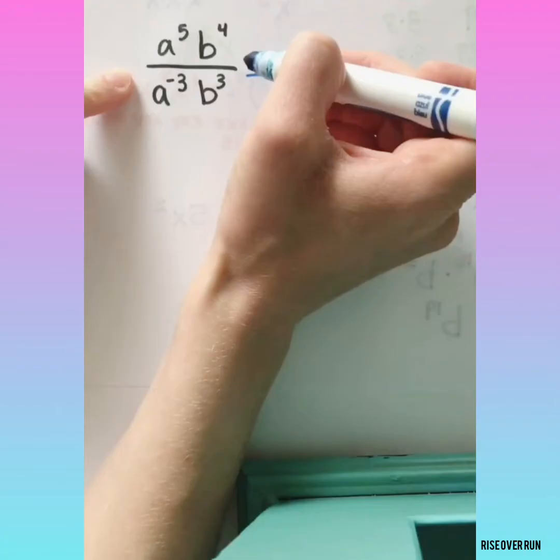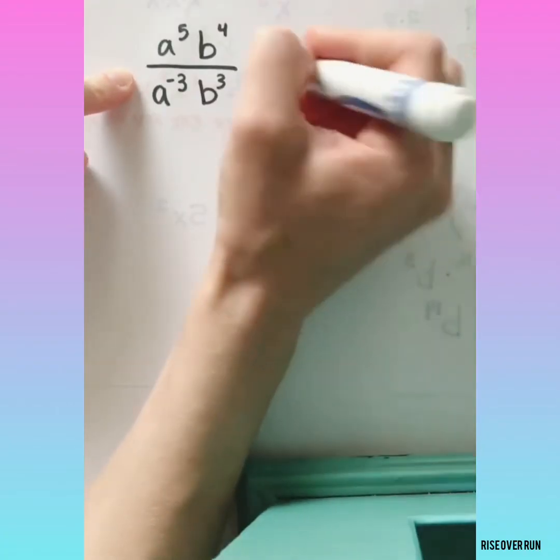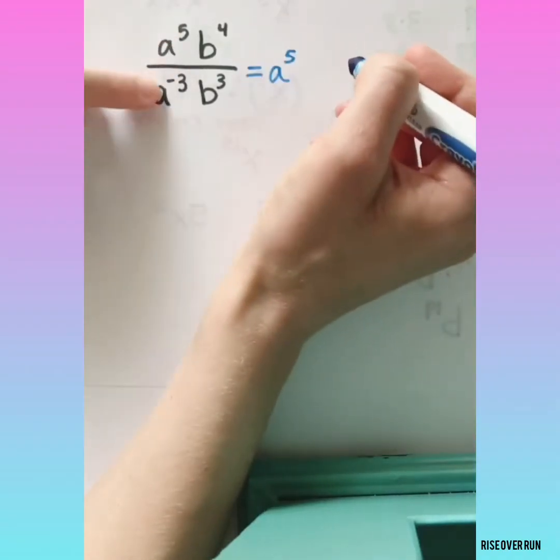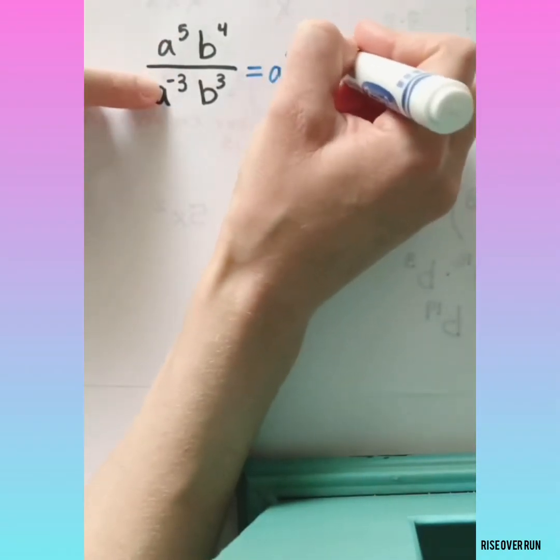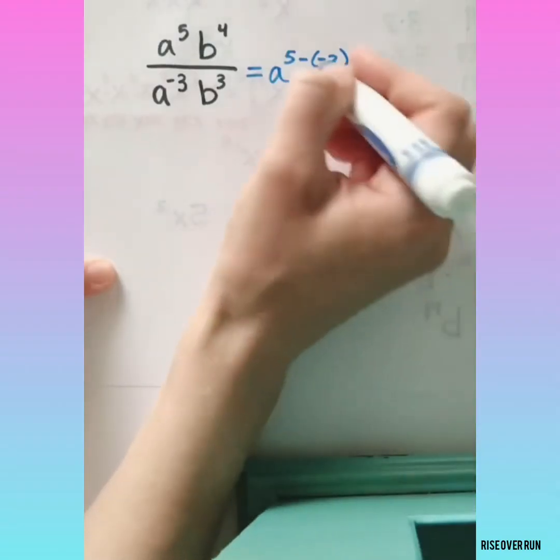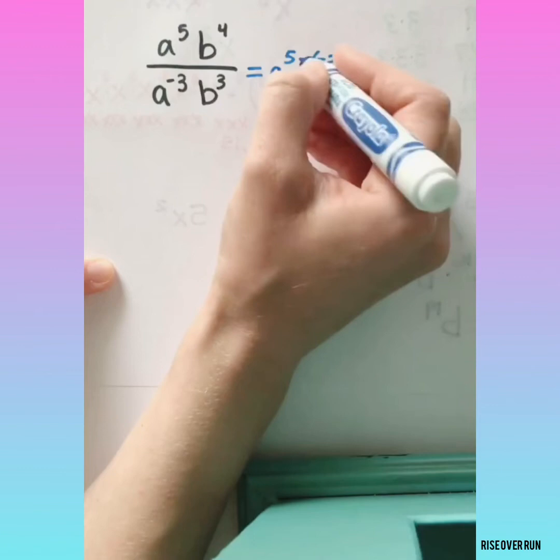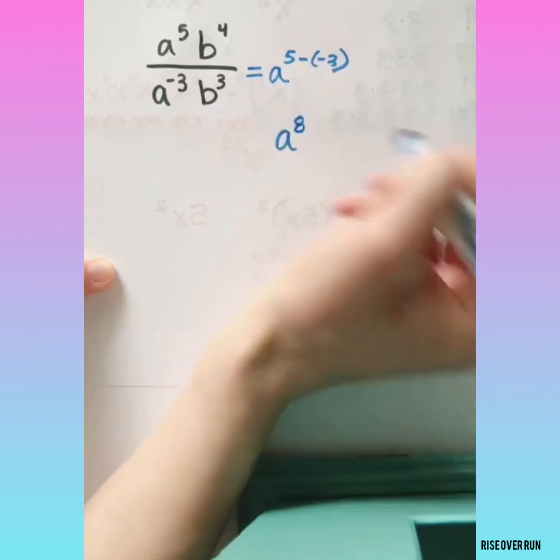This is a fraction, so that means we're dividing, so we're going to use quotient rule. We have 5 and we need to subtract negative 3. Let's go ahead and simplify this part. 5 minus a negative 3 means we're adding, so that's a to the 8th.